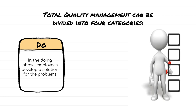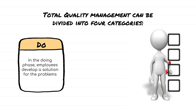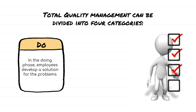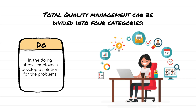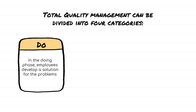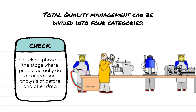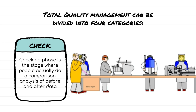In the Doing phase, employees develop a solution for the problems defined in the Planning phase. Strategies are devised and implemented to overcome the challenges faced by employees. The effectiveness of solutions and strategies is also measured in this stage. After the Doing phase, the third phase is the Checking phase, where people actually do a comparison analysis of before and after data to confirm the effectiveness of the processes and measure the results.